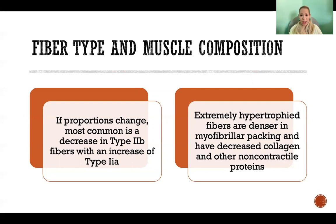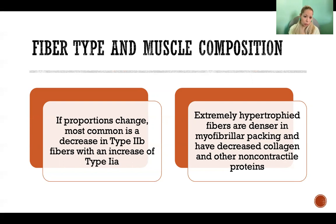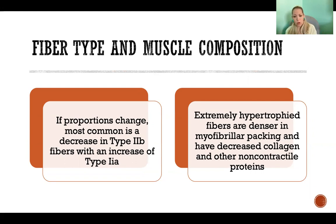The more activation we have — even if it's strength training resulting in hypertrophy — the more the muscle fibers would move in the direction of fatigue resistance because we're activating them to a greater extent. It might not be to the extent as in aerobic training, but we're still activating them more than when we're sedentary. As a general rule, we move more towards type 2B with disuse, more towards type 2A with increased use, and more toward type 1 with an extreme amount of increased use, like training for a marathon.